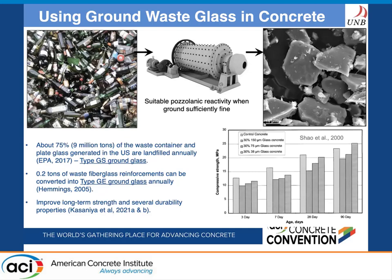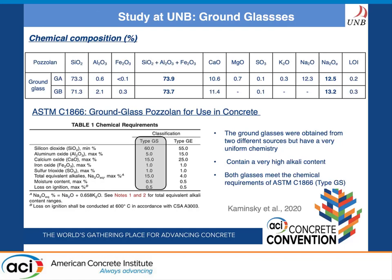Due to the pozzolanic properties of ground glass, these materials can improve several mechanical and durability properties of concrete. However, for ASR, high alkali ground glasses are not as effective. In this study at UNB, we looked at two ground glasses from two different sources. Both have very similar chemistry — silica, aluminum, and iron content are very comparable — though they have really high alkali content, which is not an issue when looking at these materials from a reactivity perspective only. These materials qualify for type GS ground glass under the new specification.